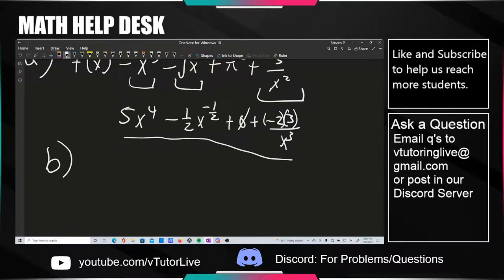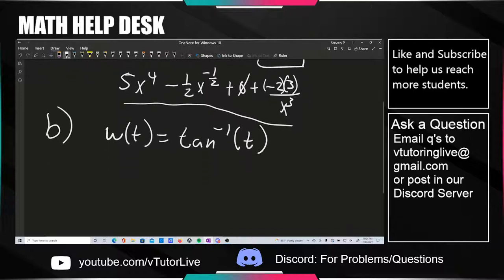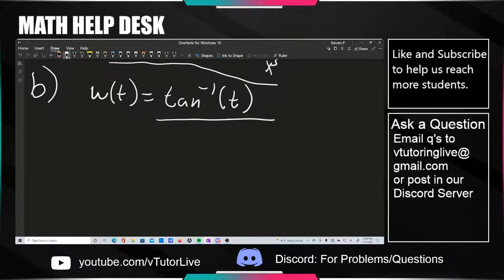Any questions on the first one? I think it should be pretty straightforward. The next one is W of T equals arctan of T. I feel a little bit bad about this one because it's almost memorization-based. Arctan is not one of the most common derivative rules — the most common being like the polynomial, exponential, product, quotient rules, sine, cosine — but it's in the next tier of just a tiny bit rarer than that.